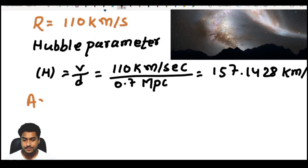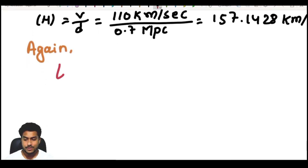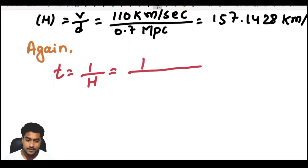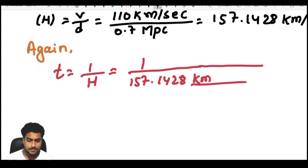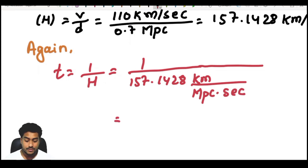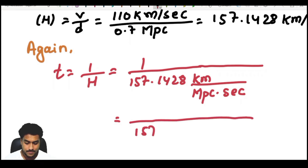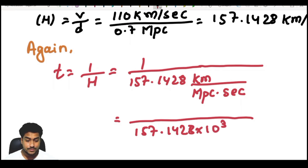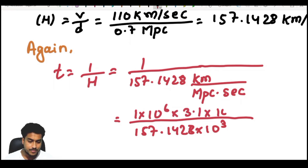Now we have to find the time of collision. The time of collision is given by 1 divided by H, where H equals 157.1428 kilometers per megaparsec per second. Similarly, we convert: kilometer means 10 to the power 3, and 1 megaparsec equals 10 to the power 6 times 3.1 into 10 to the power 16 meters.